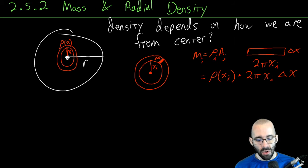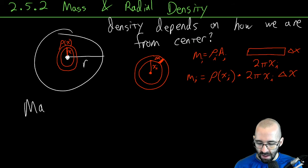Now the total mass is just what happens when we add all of these up and delta x gets really small. What is that going to look like? Mass with radial density.